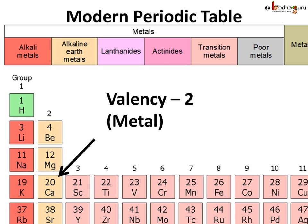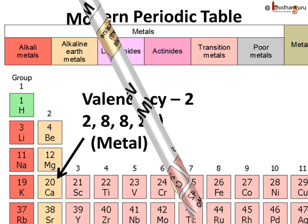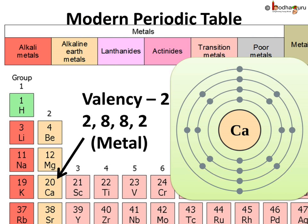For example, calcium is in the second group, which means its valency is two and it's a metal. Calcium also lies in the fourth period. This means there are four shells in the electron configuration. If we write the electron configuration of calcium, we can easily see that it has four shells and there are two electrons in the outermost shell, and thus its valency is two.